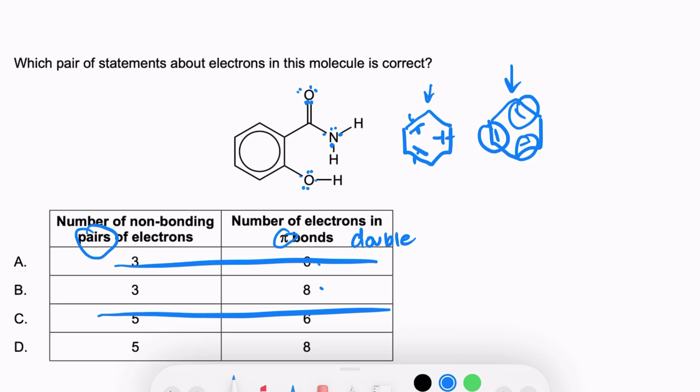The number of pairs of non-bonding electrons, I added one, two, three, four, and five. And my options were three and five, so the answer here is D.